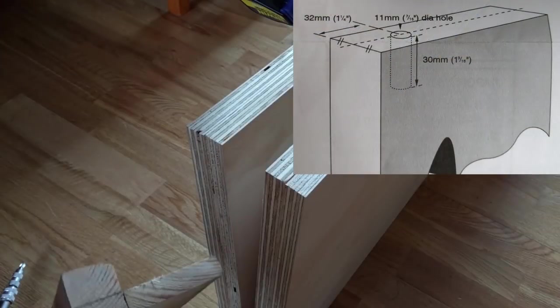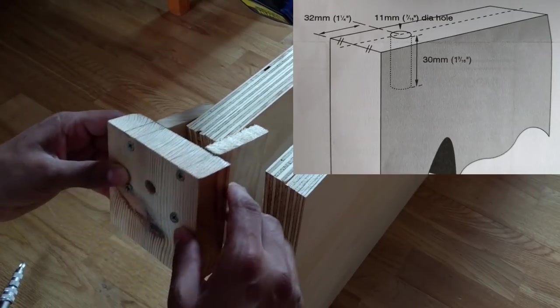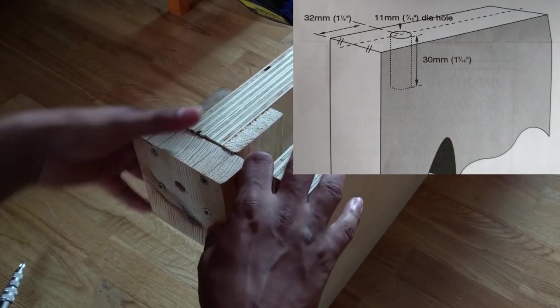I made a jig out of some scraps to ensure that I drilled the 16mm hole straight. The hole in the jig was drilled out using a drill press to keep it perpendicular.